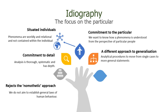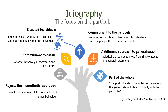The IPA method adopts analytical procedures that help us move from single cases to more general statements while still being able to return to the particular claims of the individual. IPA emphasises the value of the case study and highlights the link between the particular and the general. In line with the hermeneutic cycle, we acknowledge that the particular eternally underlies the general and the general eternally has to comply with the particular.